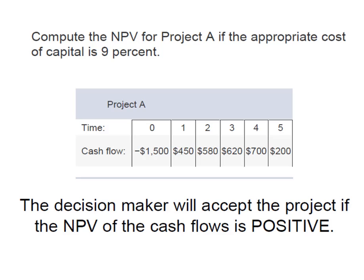They then have positive cash flows in the next five years so we can assume that this is a five-year project. Their cost of capital is nine percent. So if the net present value for this series of cash flows at a nine percent cost of capital, if that NPV is positive then the decision-maker will accept the project. Let me show you how we calculate this.